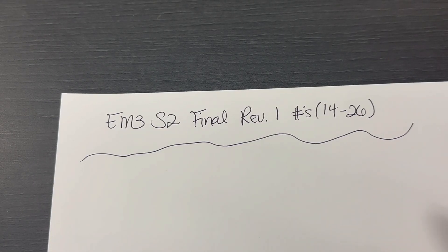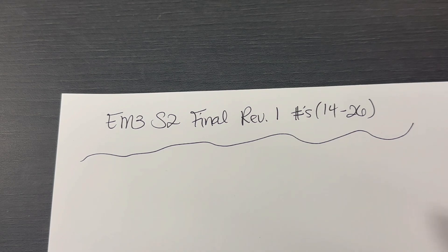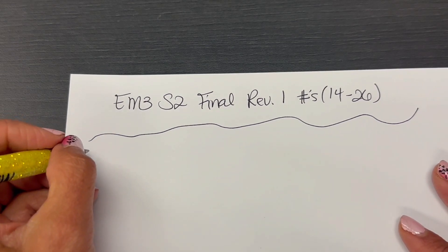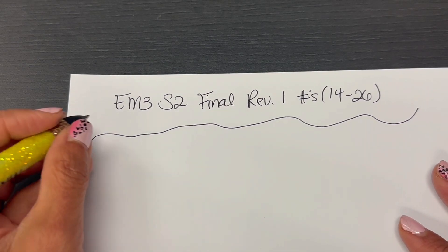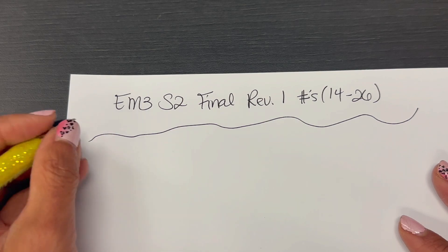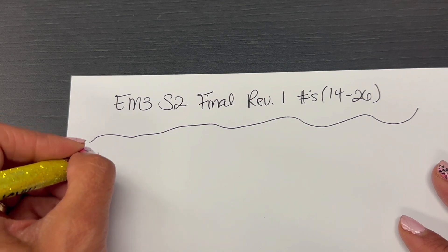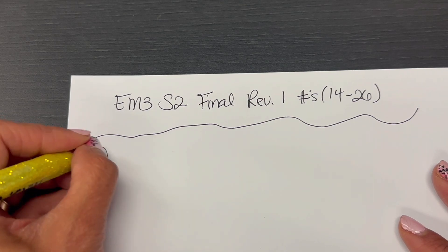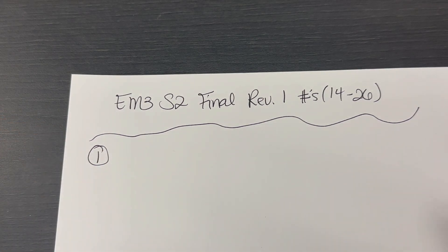Hey guys, so here's your semester two final review one, numbers 14 through 26. In Edulastic, it renumbers them 1 through 13, so number 1 is the same as number 14, but I'll just put number 1 to keep it simple.